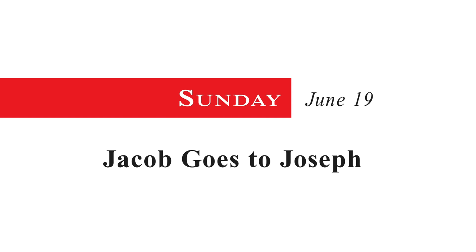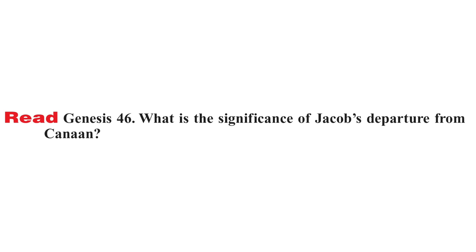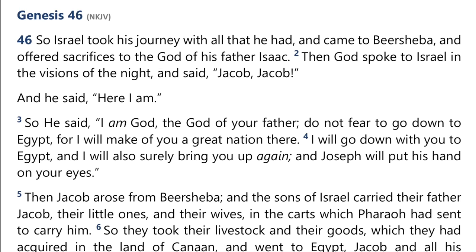Sunday, June 19: Jacob goes to Joseph. Read Genesis chapter 46. What is the significance of Jacob's departure from Canaan? Genesis 46, beginning at verse 1.